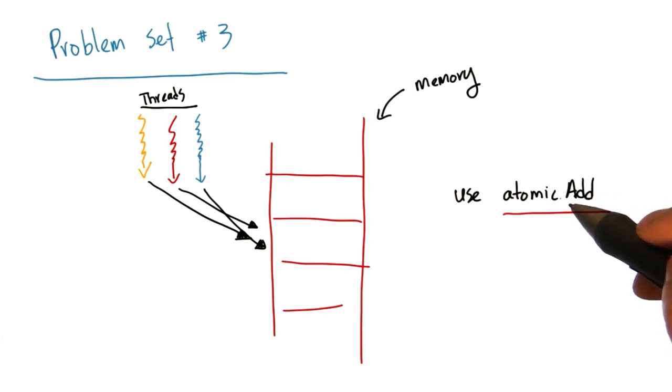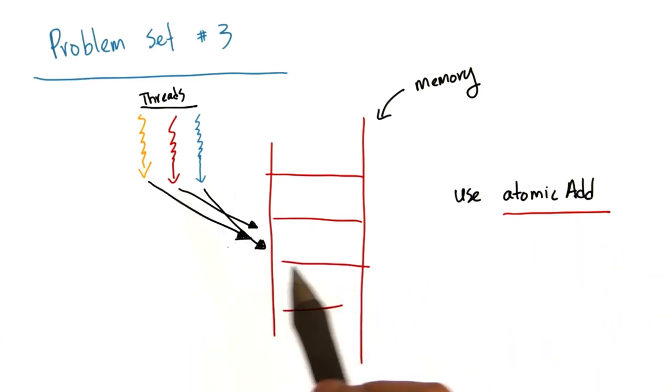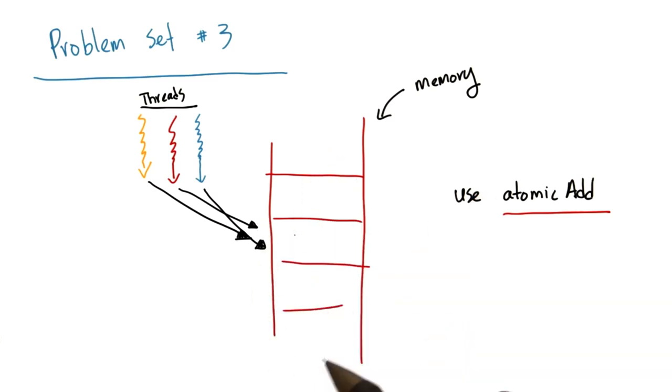Although using atomic add may be a little slow, it will ensure that multiple threads don't try and update the same memory location concurrently. In turn, that will ensure the correctness of your histogram computation. Once you get everything working, feel free to start experimenting and see if you can avoid using atomic add.